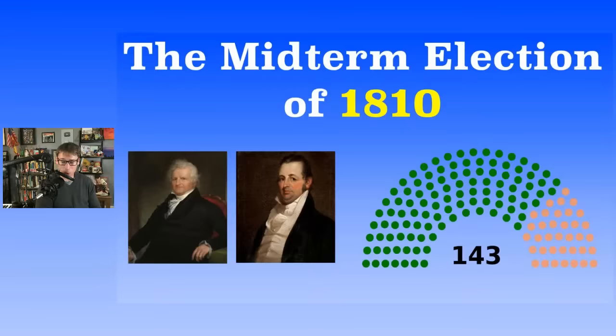To be fair, they had lost some because of the Embargo Act making Thomas Jefferson less popular. In 1808, the Democratic-Republicans weren't as popular, but they gained many of them right back in 1810, led by a rising young star named Henry Clay, a Democratic-Republican from Kentucky.